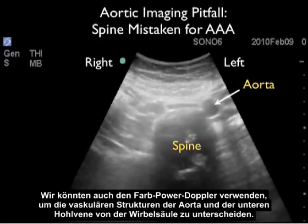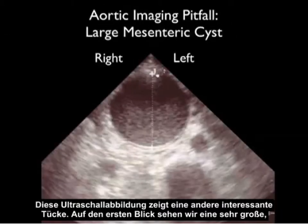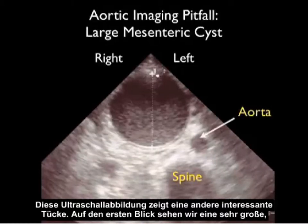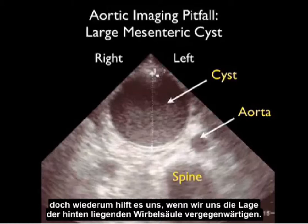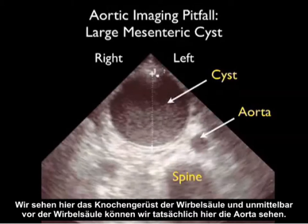This ultrasound image shows another interesting pitfall. At first glance, we see a very large dark structure towards the top of the picture that could be mistaken as a very large abdominal aortic aneurysm. But close attention to the location of the spine posteriorly will help us out — notice the bone table of the spine, and just anterior to the spine we can actually see the aorta. This very large structure is actually a very large mesenteric cyst, and it failed to have pulsations with power color Doppler.